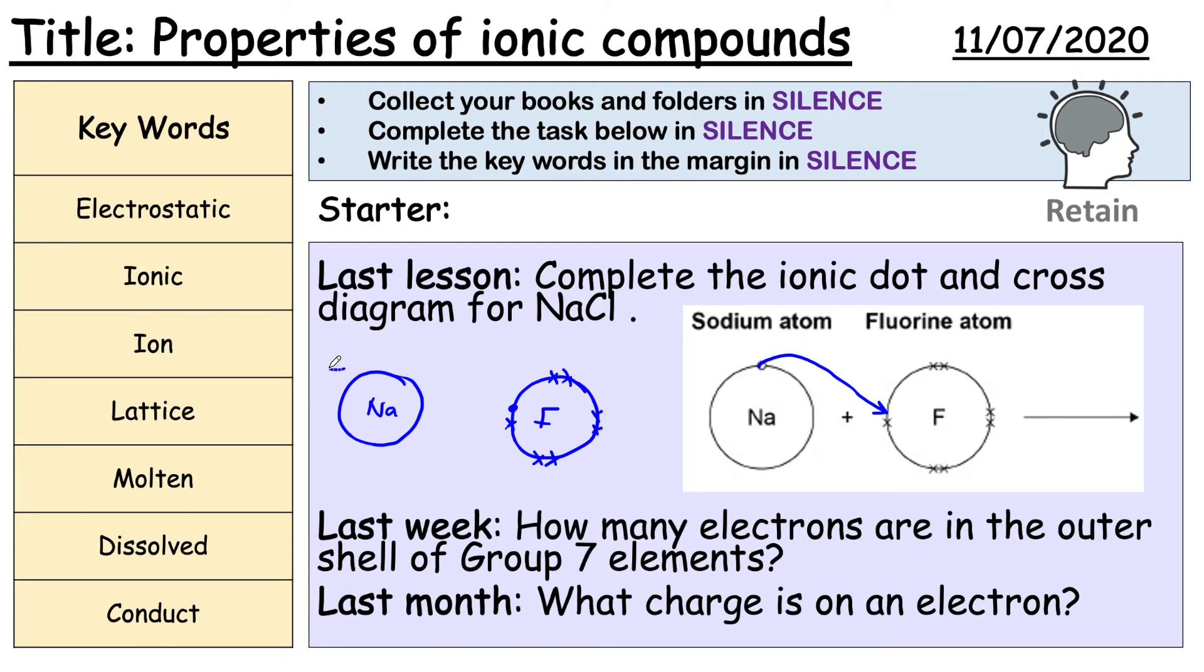We need to now show the charge and we do this by putting brackets around the atom and then indicating it's now an ion by writing the correct charge. Sodium has lost one electron so it becomes positive and fluorine has gained one electron so it becomes negative. And that's all you need to do.